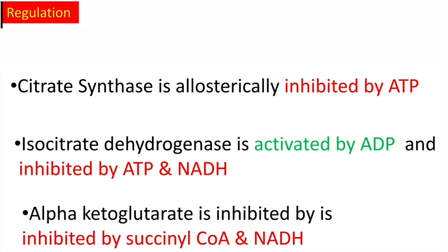The basic function of TCA cycle is to provide energy. When a cell is in an energy-rich state, as indicated by a high ATP/ADP ratio or high NADH/NAD⁺ ratio, the activity of the key enzymes of TCA cycle decreases. If the ATP/ADP ratio is low or the NADH/NAD⁺ ratio is low, then the activity of these key enzymes is increased.